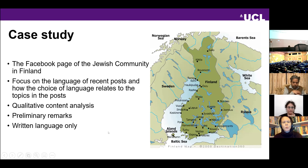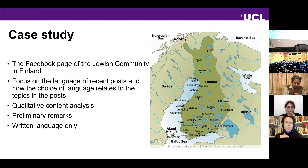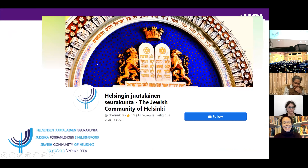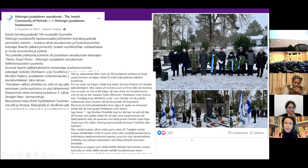This contrasts dramatically with current practice. We looked at the Facebook page of the Jewish community in Finland, focusing on recent posts for a qualitative content analysis of written language, examining how language choice relates to topics. Their logo uses four languages: Finnish, Swedish, English, and Hebrew. A post about Finnish Independence Day — a big deal in the Jewish community, commemorating soldiers from World War Two — is almost entirely in Finnish with a tiny bit of English and a section in Swedish, the two official languages of Finland.